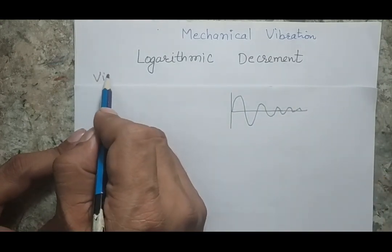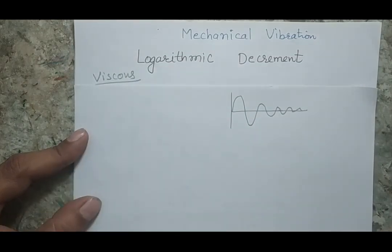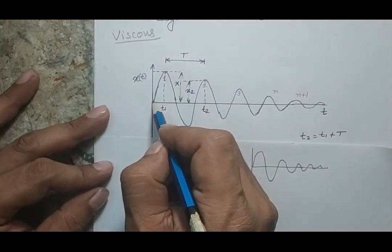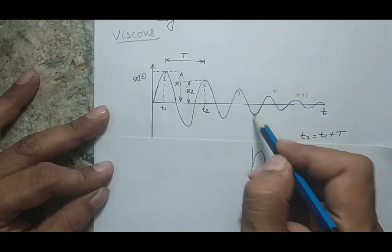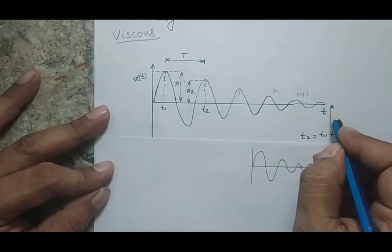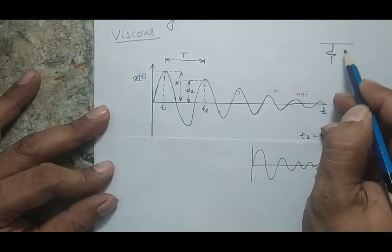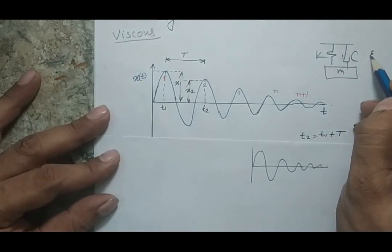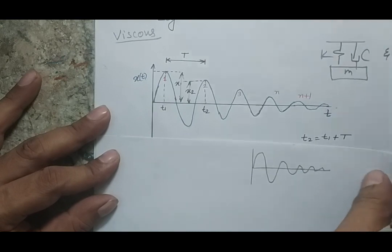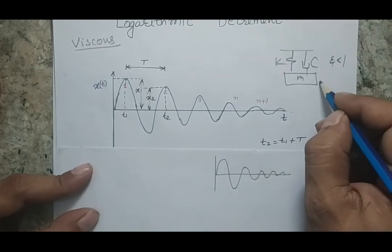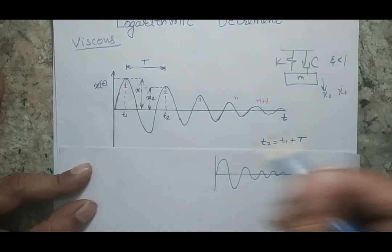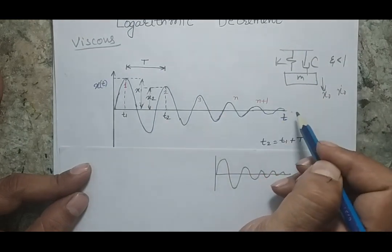Here we are talking about the viscously damped system. I am showing the response of the system — if this is my initial disturbance, the system responds in this way, where the horizontal axis is time and the vertical axis is amplitude. The system has a damper and a spring, and the damping ratio zeta is less than 1, meaning it is an under-damped system. When you give a certain disturbance in terms of velocity or displacement and release the system, it will vibrate and its amplitude will decay with respect to time.